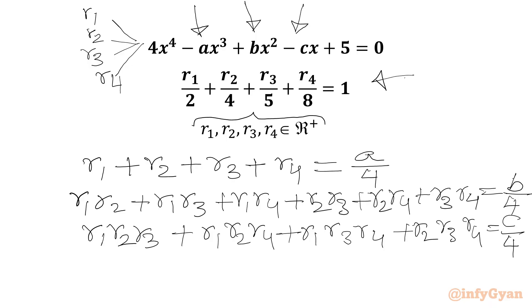Now last equation we can write product of all the roots: R1 times R2 times R3 times R4. This will be equal to constant over leading coefficient. Constant is 5, leading coefficient is 4.